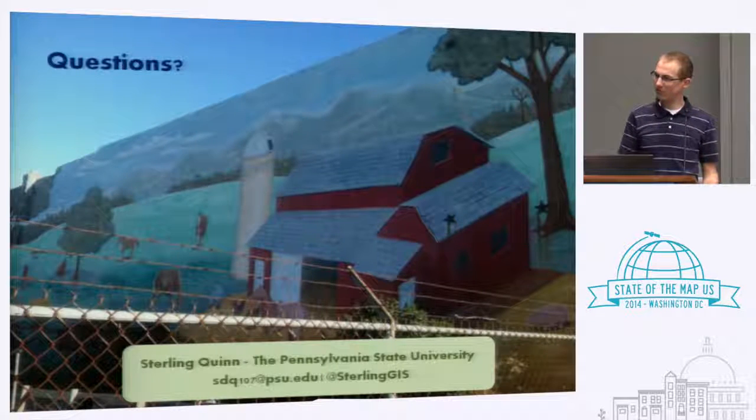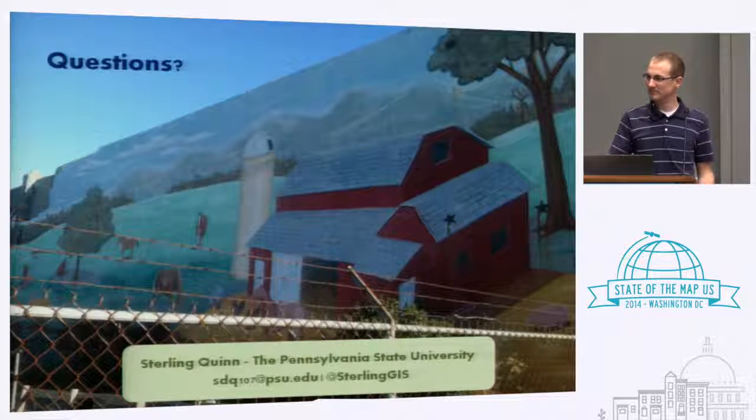We have a couple minutes for questions. One audience member mentioned the USDA has a database of farmers markets across the nation. That's a good tip — I'd like to look into that USDA source. One thing we saw was that there are sources at a lot of scales: at a neighborhood scale, at a city scale, and now I've heard about a national scale. Thank you.